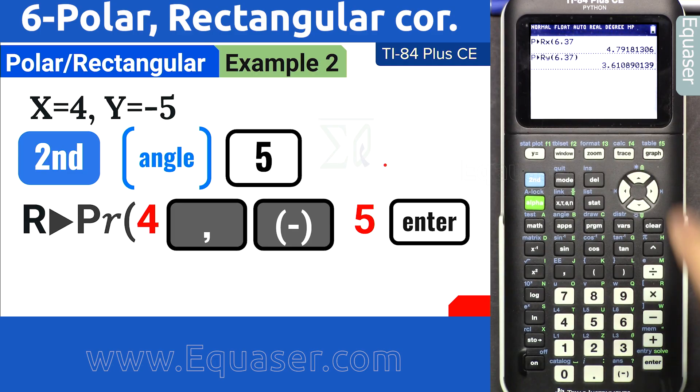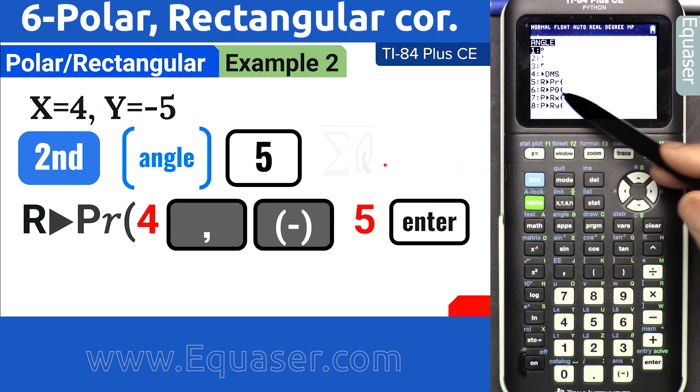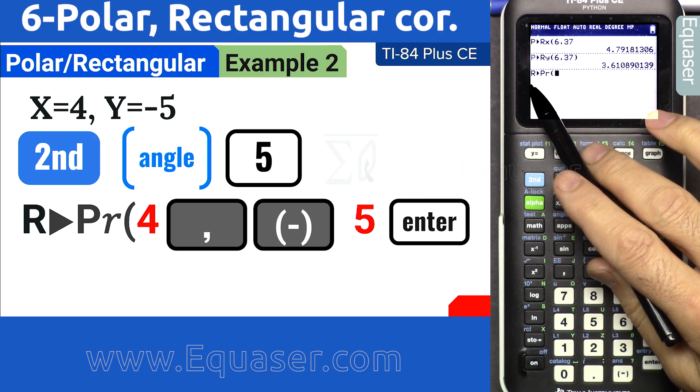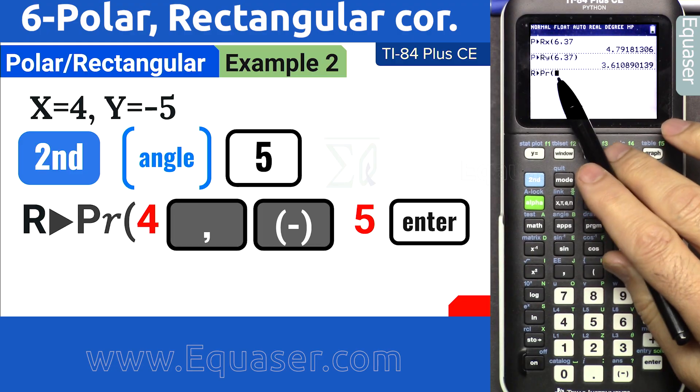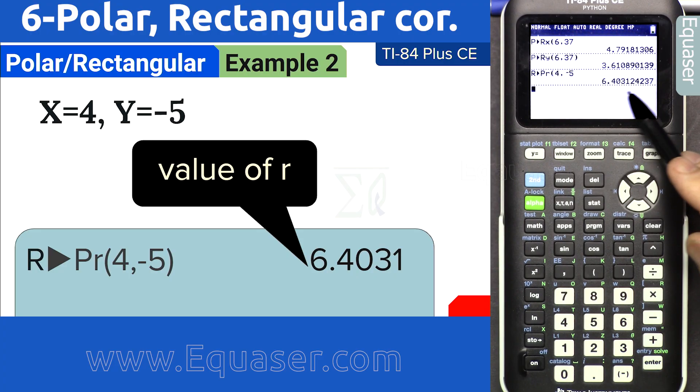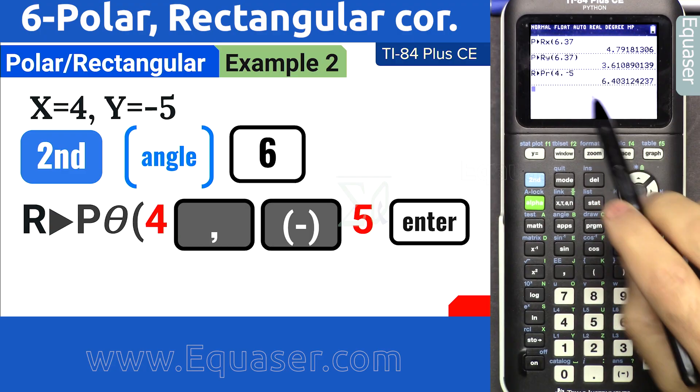Let's press second function angle. This time press 5 to get r. It says rectangular to polar r. x is 4, and then comma, and then we have to enter y. For minus 5, we press this minus at the bottom and then 5 enter. So we got the r value.